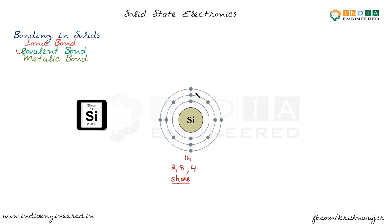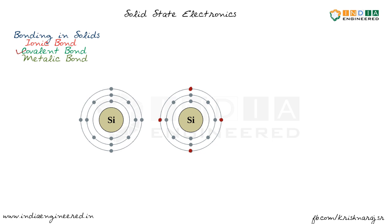This silicon atom has four electrons in its valence shell. If it gains four more electrons, it will form a stable noble gas configuration of 2-8-8. So it needs four more electrons to form the stable configuration. This is achieved by sharing an electron with an adjacent silicon atom.